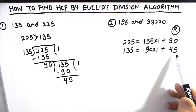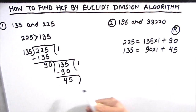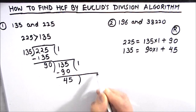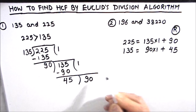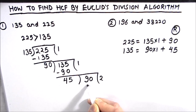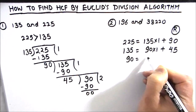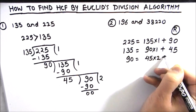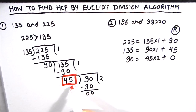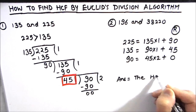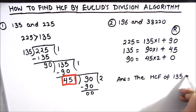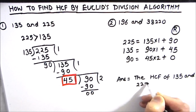Our remainder is now 45, so we continue. Now 45 becomes the new divisor and 90 is the new dividend. Dividing 90 by 45: 45 times 2 is 90, so the remainder is 0. We write 90 = 45 × 2 + 0. The divisor by which we get remainder 0 is the HCF. So the HCF of 135 and 225 is 45.